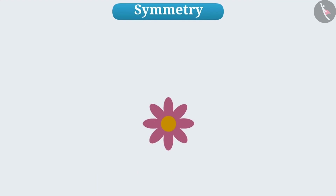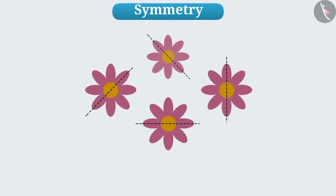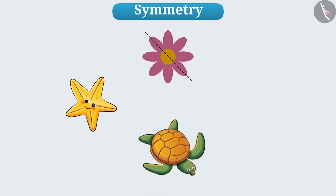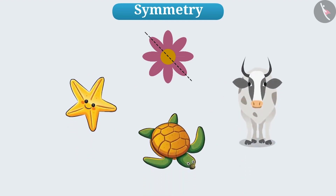In our daily life, we see many symmetrical figures. Like, look at this flower. We can make two parts in different ways which are similar to each other — it is a symmetrical shape. Similarly, the shapes of fish, turtle, cow, and many other creatures are symmetrical in nature.